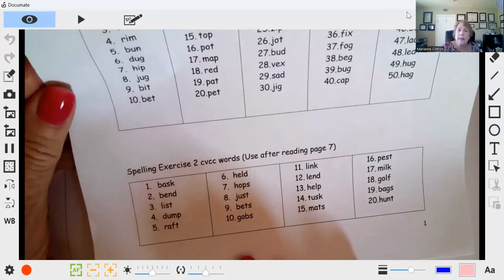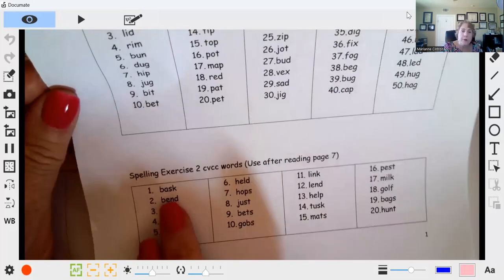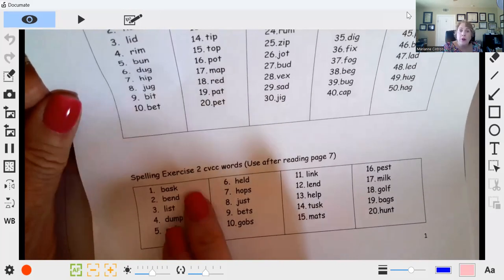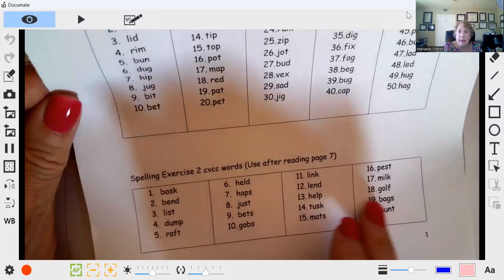Exercise two, same thing. Have them write the first two sounds that they hear. Have them the second day, they're going to write the second two sounds that they hear. These are the CVCC words.